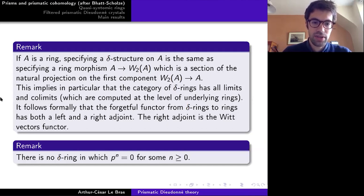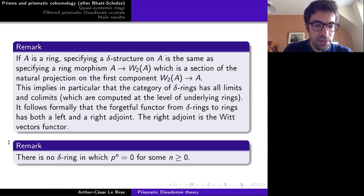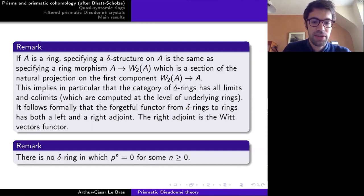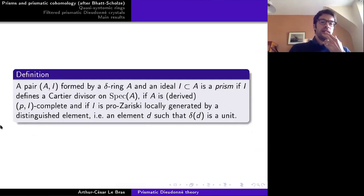Another viewpoint: giving a delta structure on A is the same as specifying a ring morphism from A to W_2(A) (length-two Witt vectors over A) which is a section of the natural projection onto the first component, via the map x ↦ (x, delta(x)). This viewpoint shows that the category of delta rings has all limits and colimits, computed on underlying rings. The right adjoint of the forgetful functor is given by the Witt vectors functor.